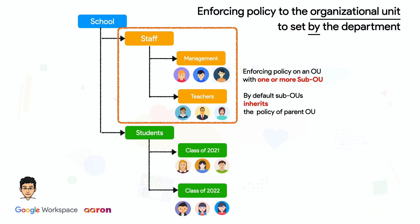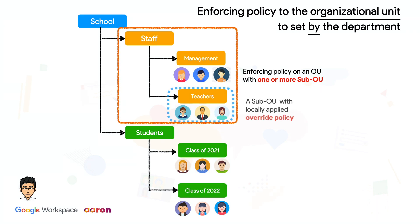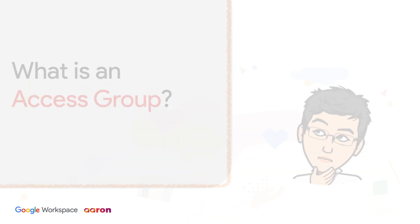Although each child inherits the setting from its parent, the settings can be customized. The important thing to highlight is that changing a setting at a higher level changes the setting for all sub-organizations that inherit that setting. However, custom settings remain unchanged. Therefore, the admin should always check the effectiveness of higher level policy towards the child OU.